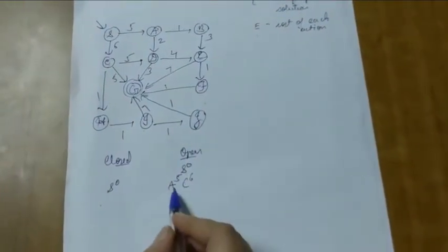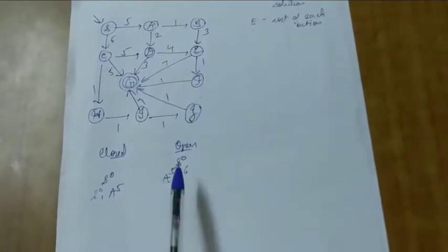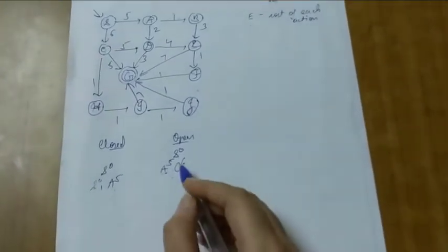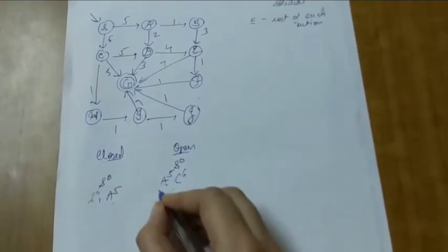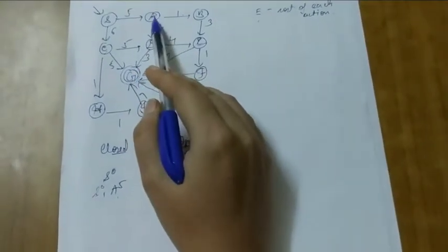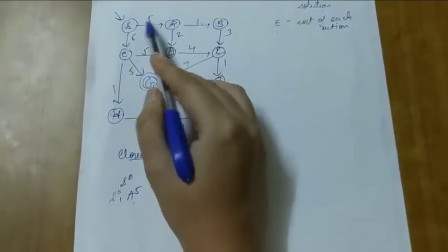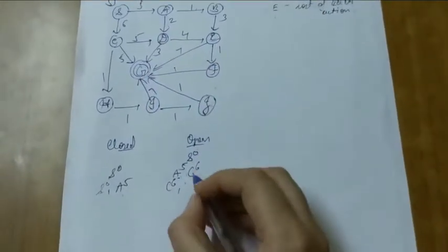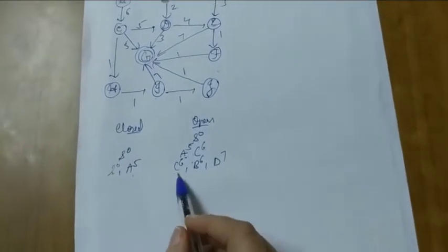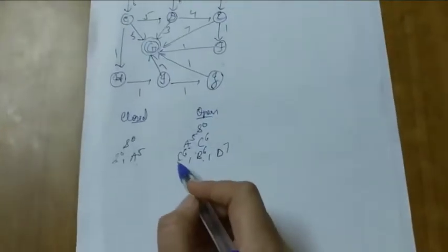Moving A to the closed list, we expand that node while keeping all others as they are. C remains at cost 6. Expanding A, we can go to either B or D. Going to B costs 5+1=6 and going to D costs 7. So we have B=6 and D=7. Now both C and B have the same cost of 6, so for simplicity we consider C first.